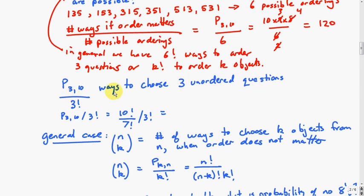Now we can put this together in a general formula. We can use 3 factorial instead of just putting 6. So P(3,10) is 10 factorial over 7 factorial divided by 3 factorial. That would be 10 times 9 times 8 over 6. The 10 factorial over 7 factorial gives 10, 9, 8, and the 7, 6, 5, 4, 3, 2, 1 cancel. Then 3 factorial is 6, and that's the same 120 we had before.